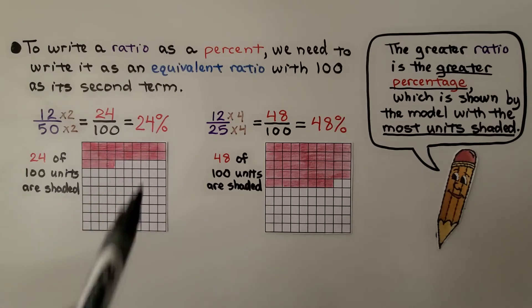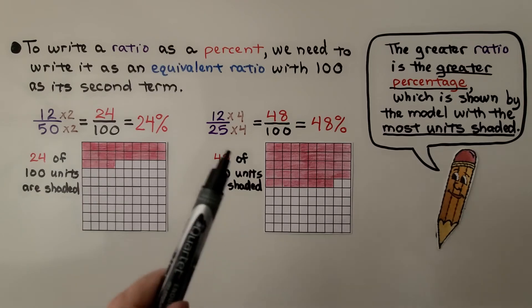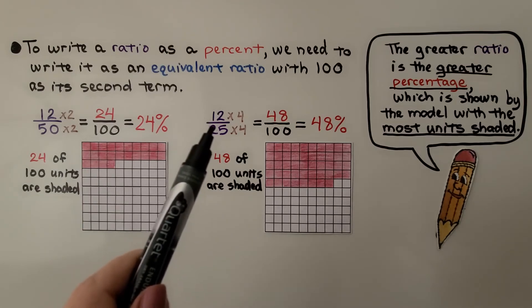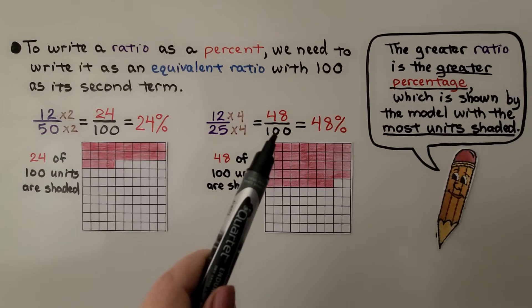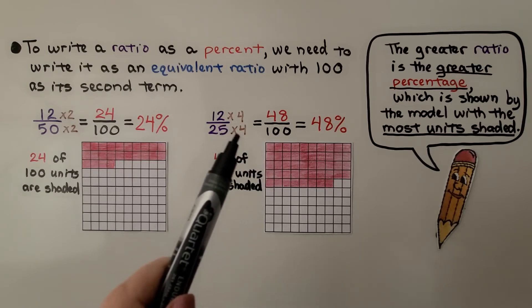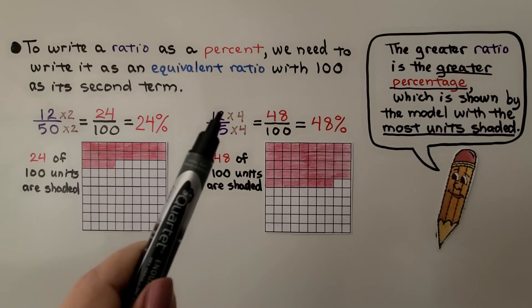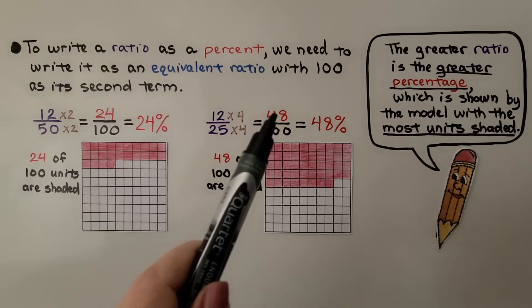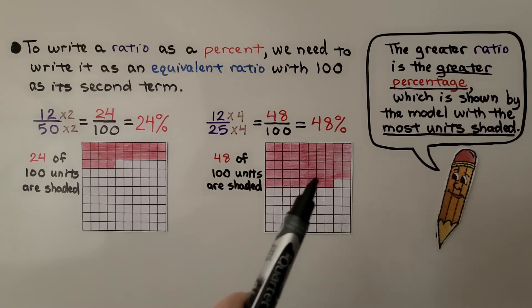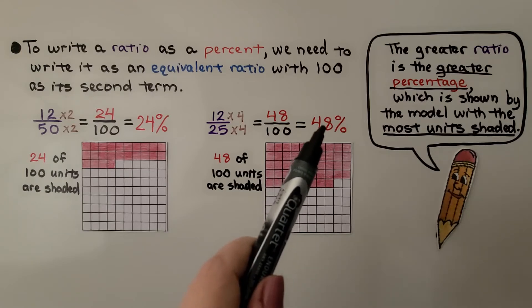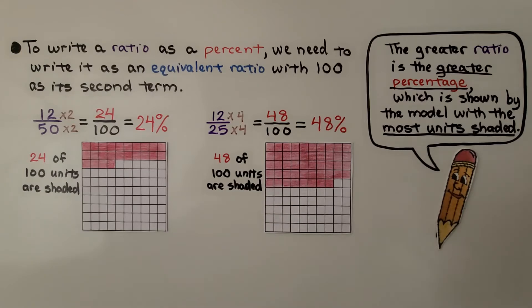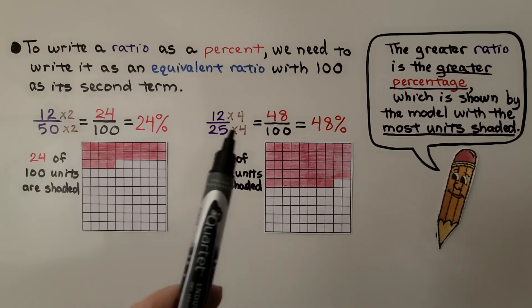That would give us 24%. If we had the ratio 12 to 25 to give it 100 as its second term as the denominator, we'd need to multiply it by 4. So we multiply the 12 times 4 and get 48. We shade 48 of the 100 units. That would give us 48%. And the greater ratio is the greater percentage, which is shown with the most units that are shaded. So this would be the greater percentage. That's the greater ratio.